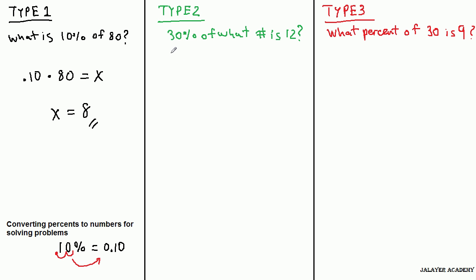In type 2, we're asked 30% of what number is 12? So sticking with this same thought pattern here, there's some number such that when I multiply it by 30%, I get 12.